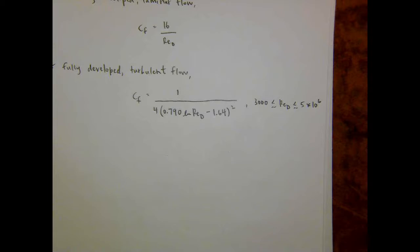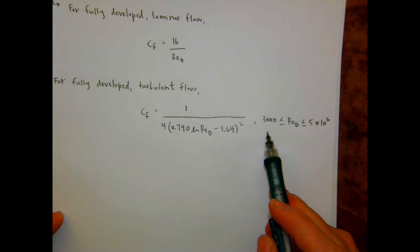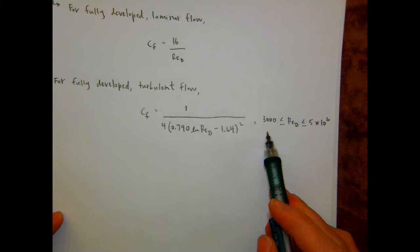We're going to start talking about the thermal boundary layer next. The laminar equation applies up toward about 2300 to 3000, and the turbulent equation starts at 3000. There's a kind of transitional region between about 2300 or 3000 to 10,000 where it's becoming turbulent but not fully turbulent, so it's a transitional area where neither equation works particularly well.